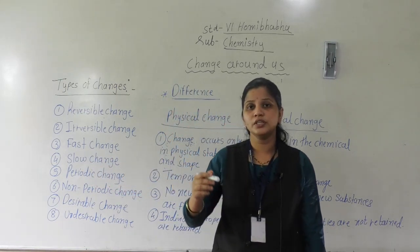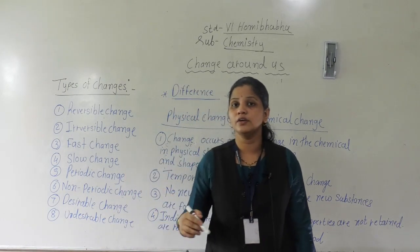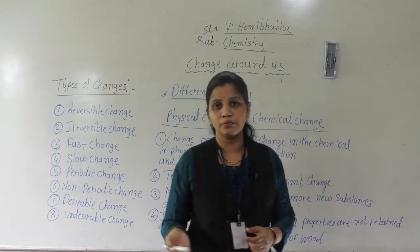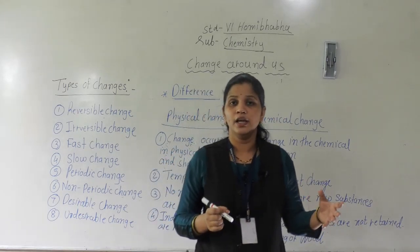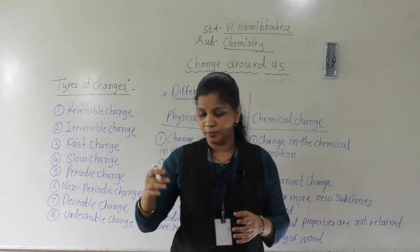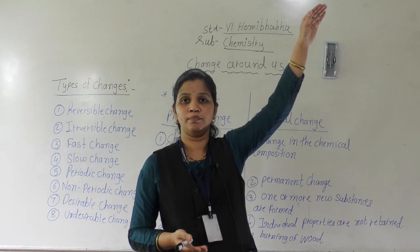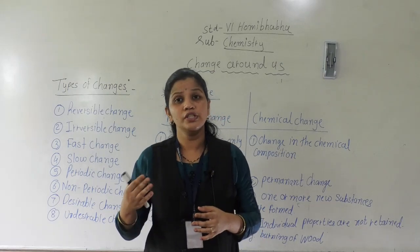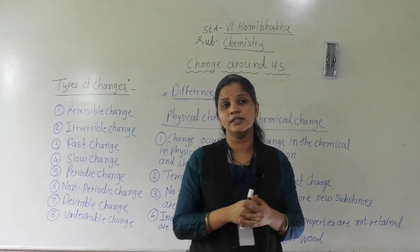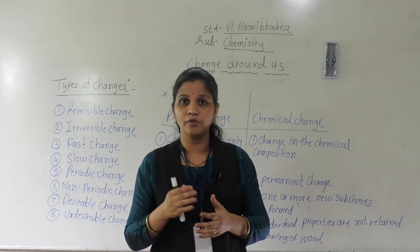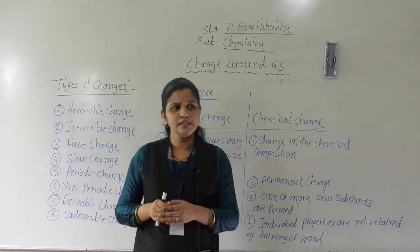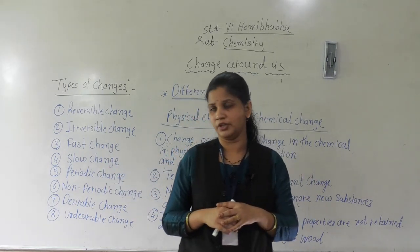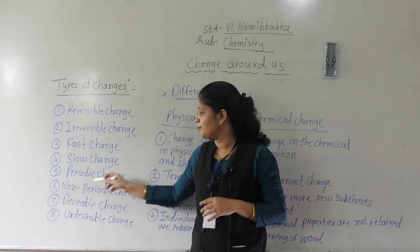Slow change: the change occurs but it requires more time. That is known as a slow change. For example, growing plants — suppose today a plant's height is this much, it won't be bigger the next day because it takes too much time. Growing of children is also a slow change — when you were in junior KG you were small, but now you have grown. This process takes a longer time to complete.